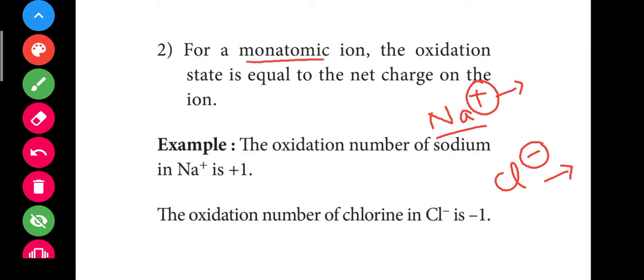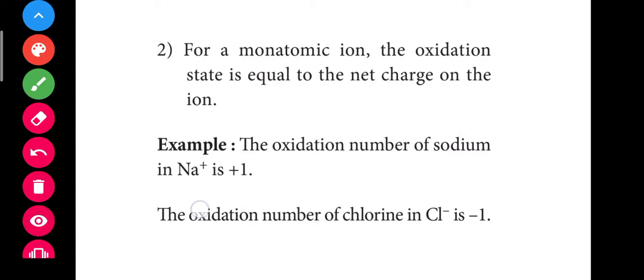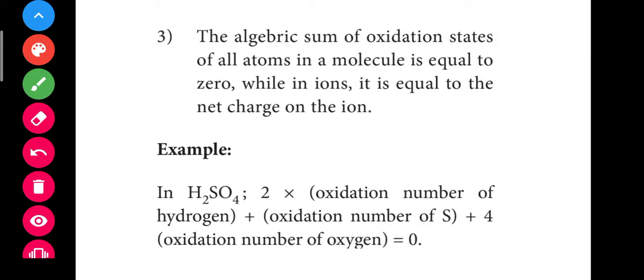So for a monoatomic ion, the oxidation state is equal to the net charge. Na+ has oxidation state plus 1, and Cl− has oxidation state minus 1. Now let's go to the third rule: the algebraic sum of the oxidation states of all atoms in a molecule is equal to 0.